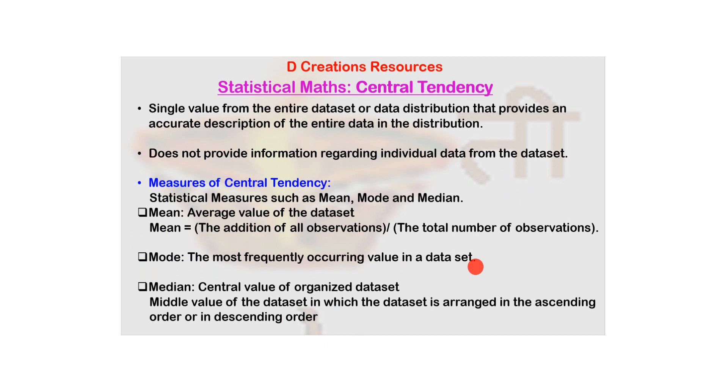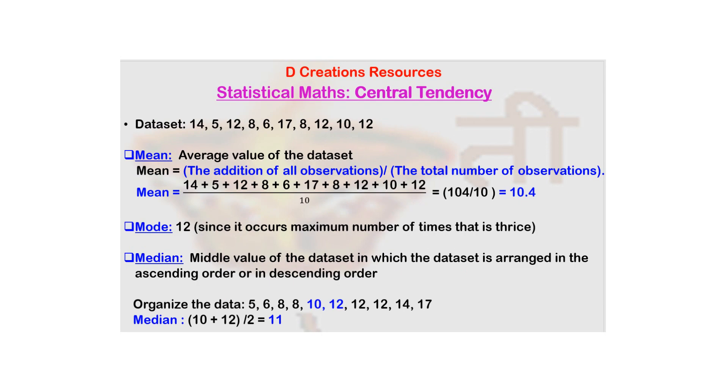And then there is median. What is median? It's a central value for an organized data set. That means you have to arrange all the data points in either ascending or descending order, and then you have to see the middle value. Now as it is clear, had this been... now here you can see it's 10 is the number of elements. Had this been a data set where there were 11, or like odd number of elements, then it's very easy to just find the center.